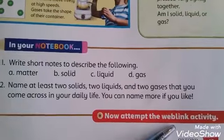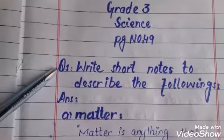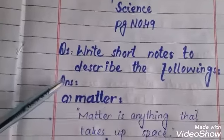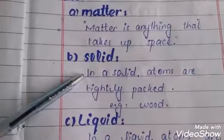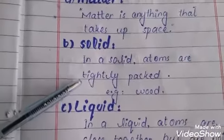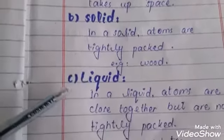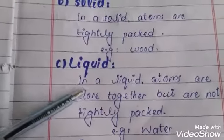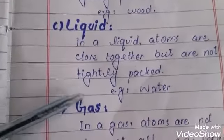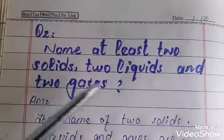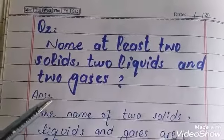Now, write the questions in your notebooks from page number 49. Question number one: write a short note to describe the forms of matter. Answer: Matter is anything that takes up space. In a solid, atoms are tightly packed — for example, wood. In a liquid, atoms are close together but not tightly packed — for example, water. In a gas, atoms are not close at all — for example, perfume.